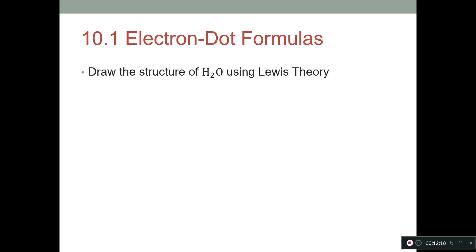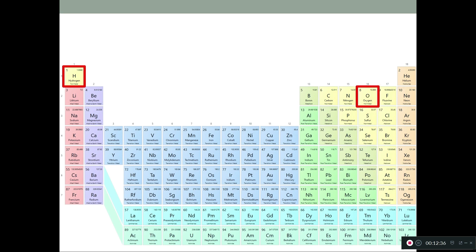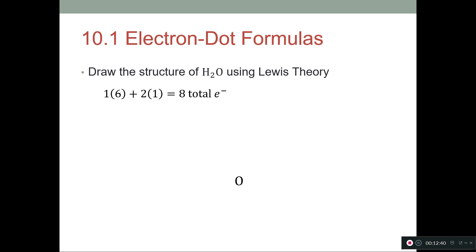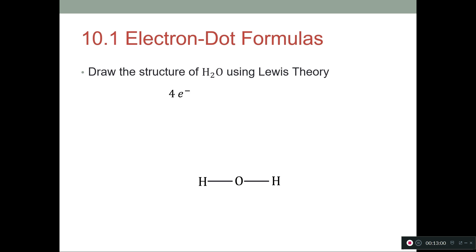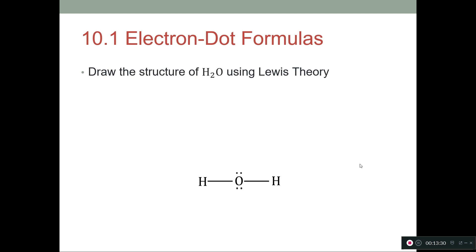Next, we draw water (H2O) using Lewis theory. We have eight total electrons: six from the oxygen and one from each of the two hydrogens. Hydrogen is farther from the carbon column, so oxygen is the central atom. Place the hydrogens on the outside, put bonds between them. Subtract two times two for the two bonds, leaving four electrons. Hydrogens do not follow the octet rule — they only ever want two electrons in their outermost shell, so a single bond to each hydrogen fills them. Put the remaining four electrons as lone pairs on the oxygen, giving zero remaining. This is the structure for water.